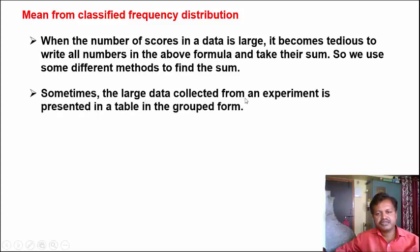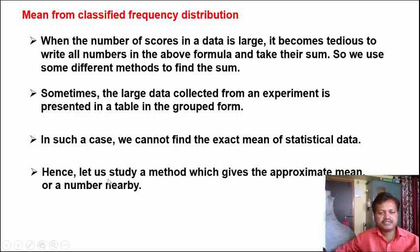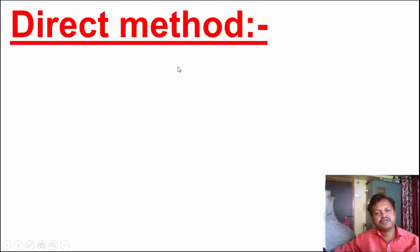Sometimes the large data collected from an experiment is presented in a table in grouped form - Vargikrit form. In such a case, we cannot find the exact mean of the statistical data. Hence, we study a method which gives the approximate mean, a number nearby. This is the first method - the Direct Method.